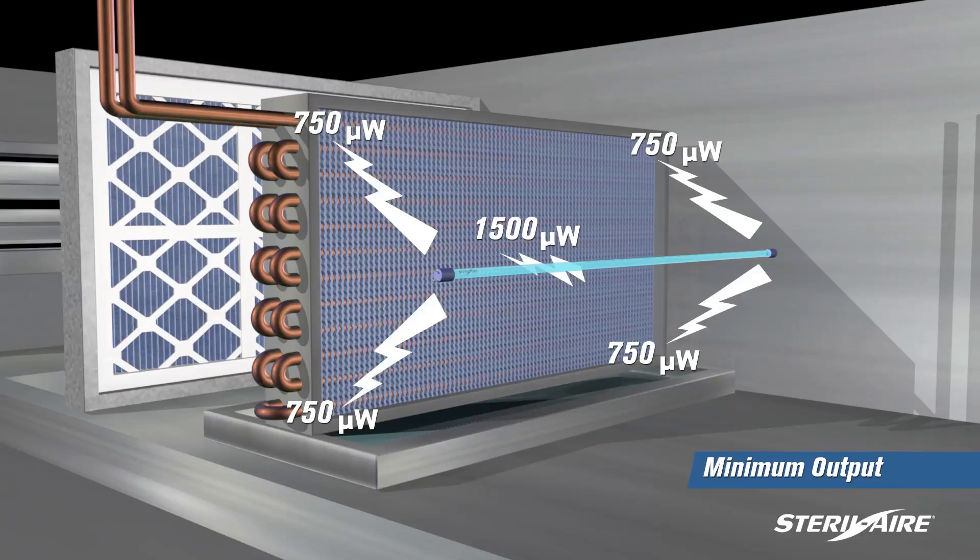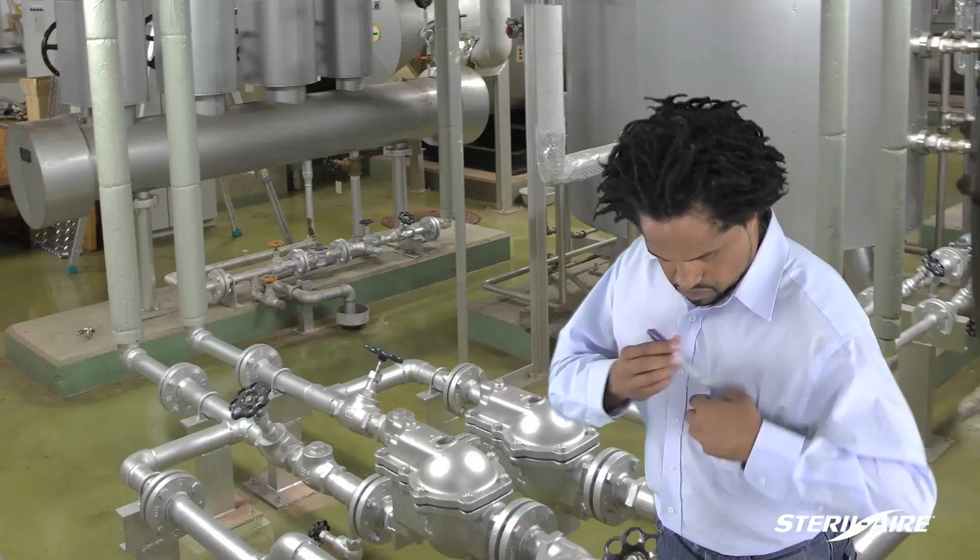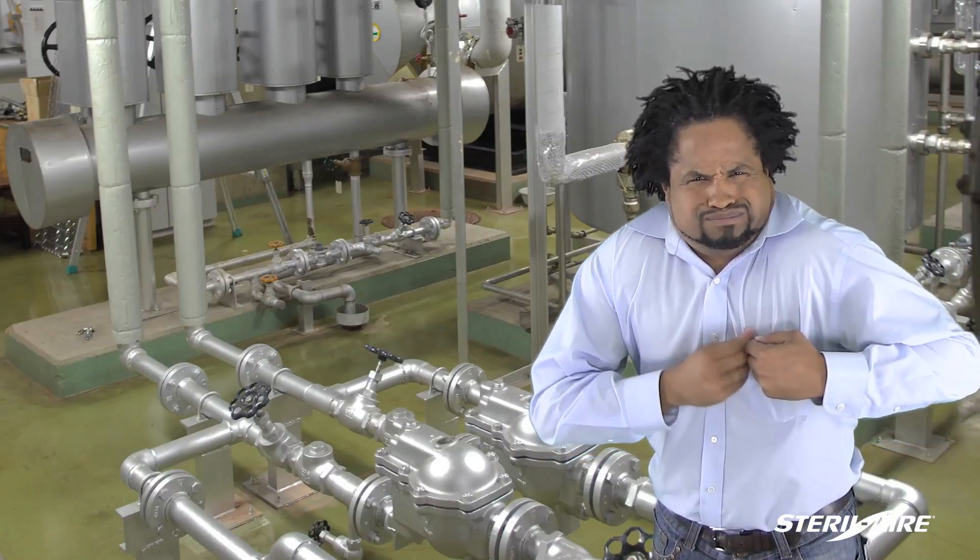In order to have sufficient microwatts to kill both the mold growing in the coil and the microbes in the air, sterile air recommends at least 750 UVC microwatts at any point on the coil face. Without maintaining these standards, the people in the building will remain vulnerable.